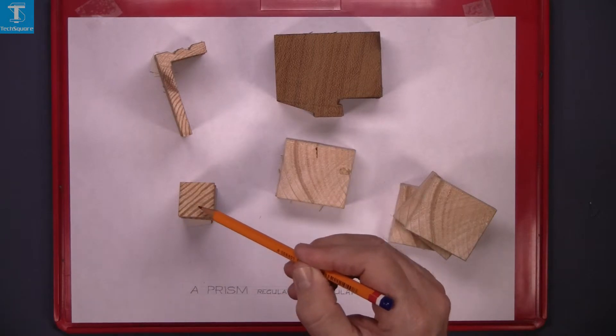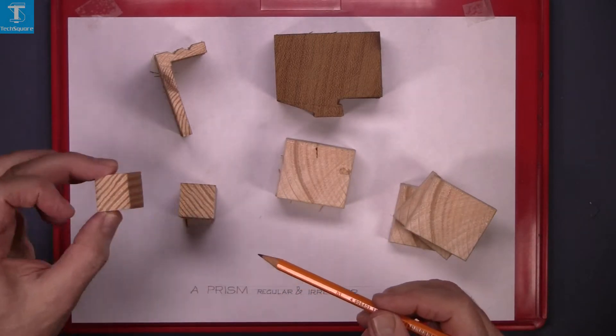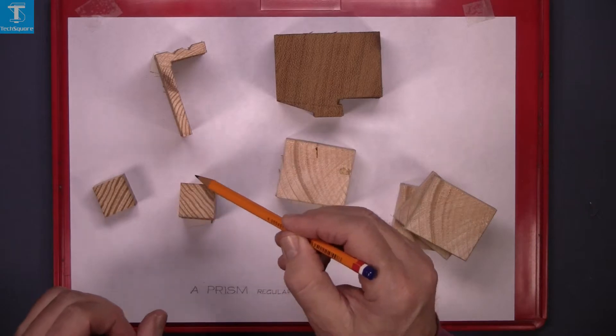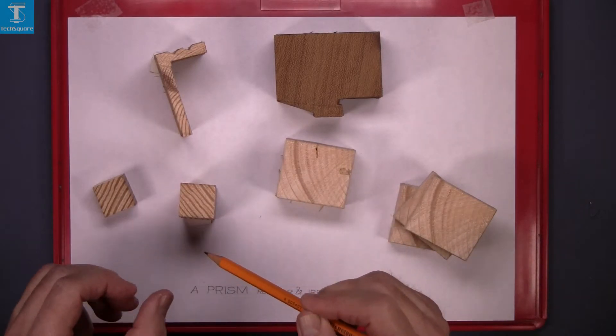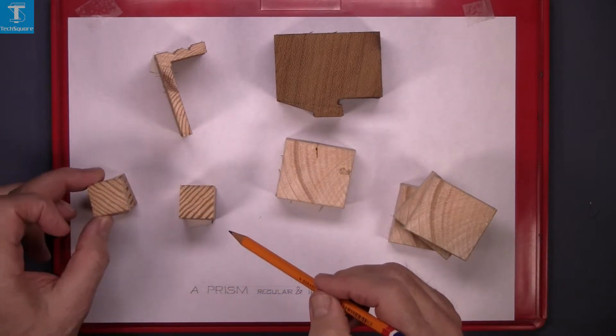This is another prism. This is a regular prism. If I take off a section of it, this shape is the same as the original shape. And so on.